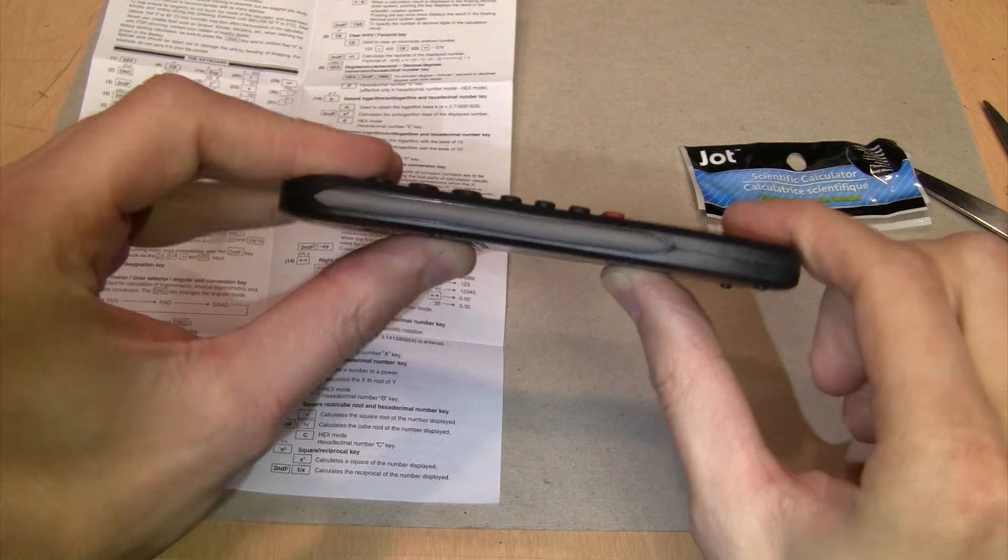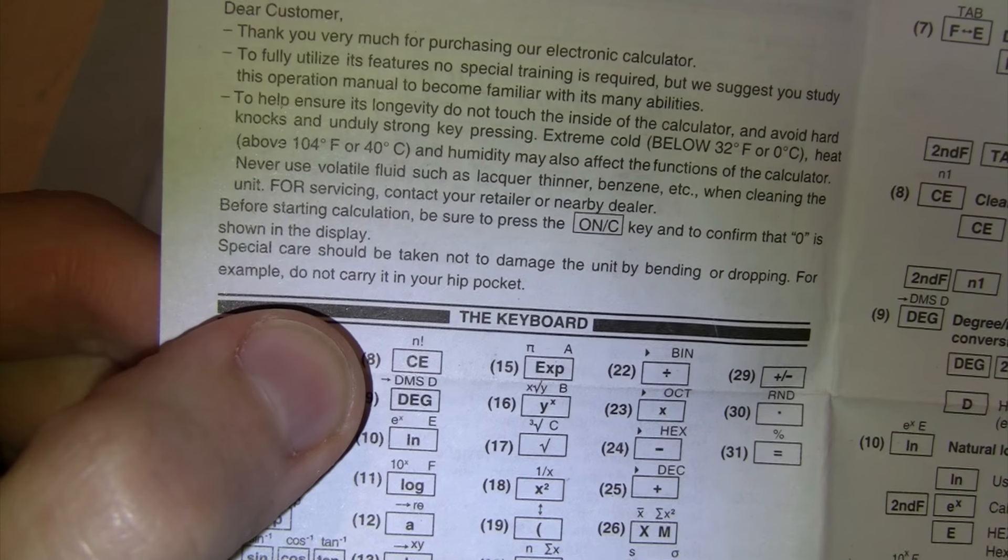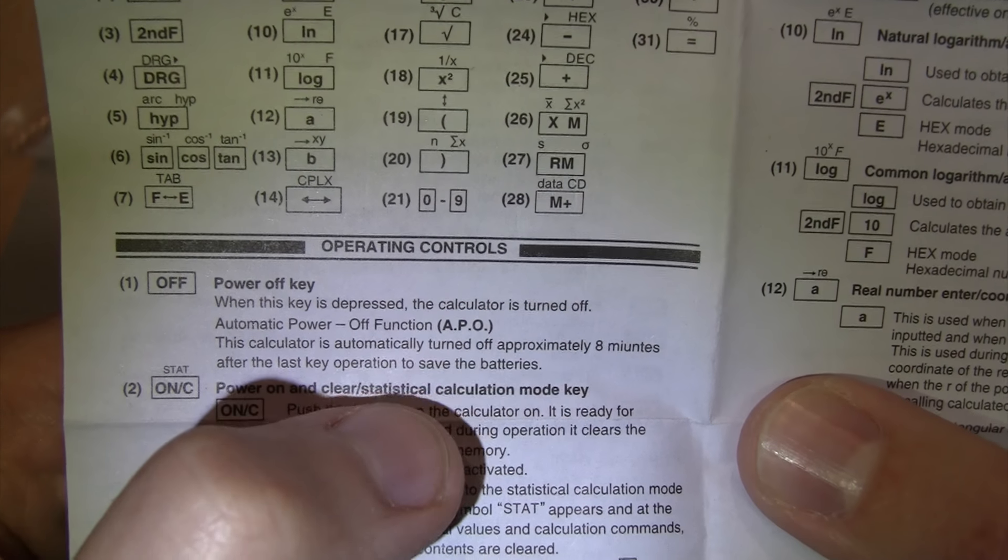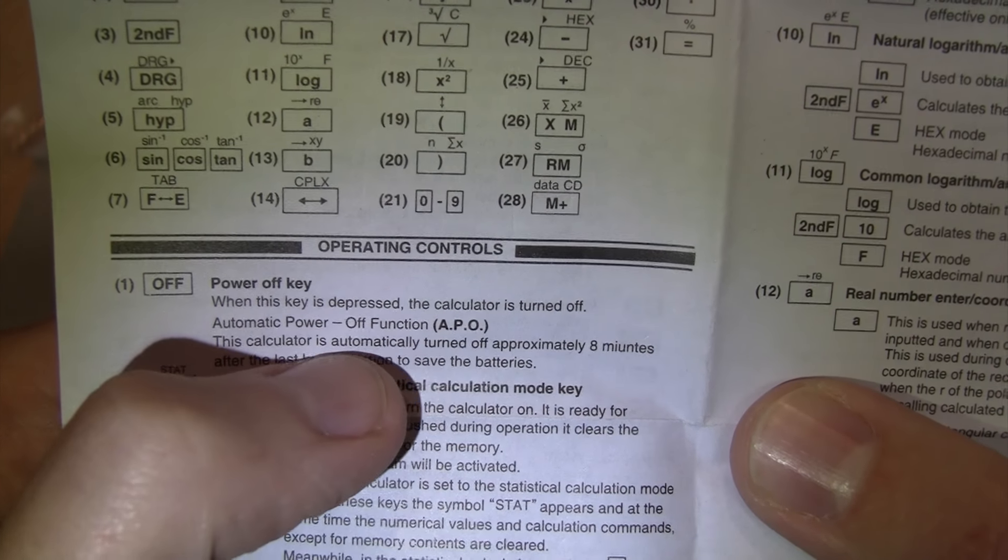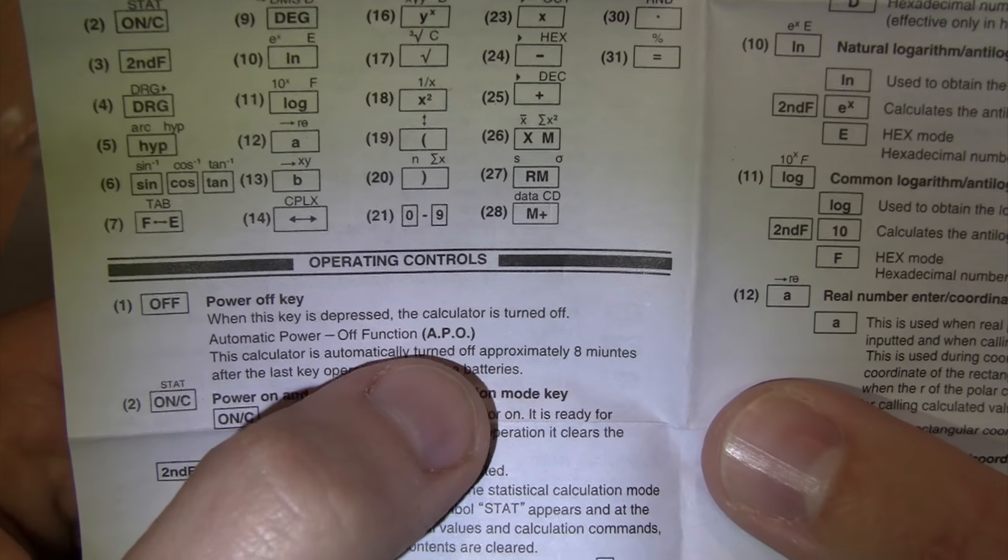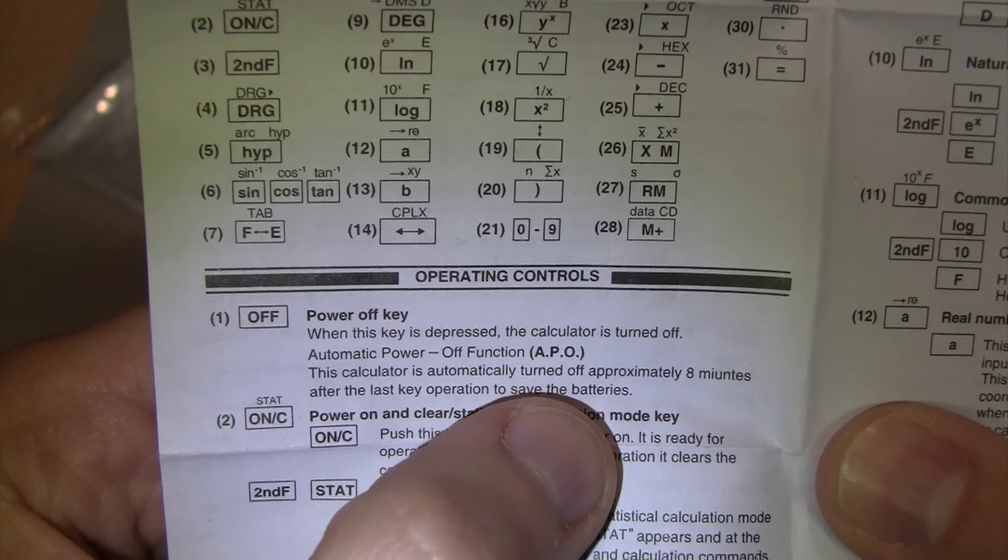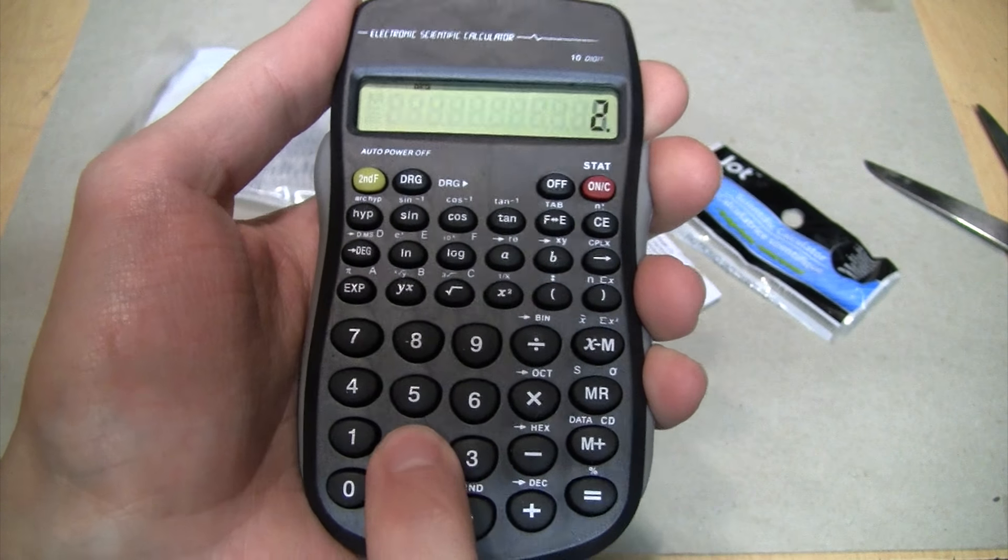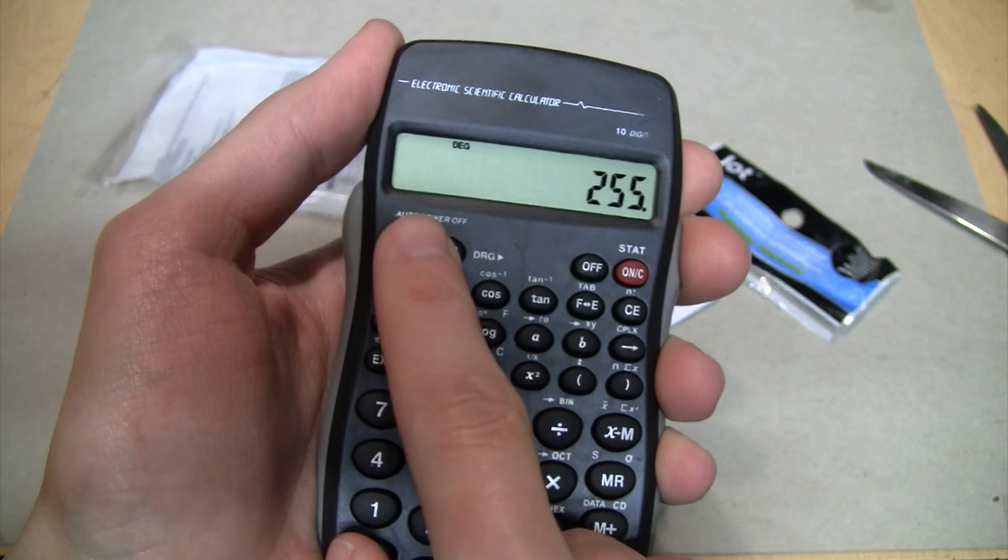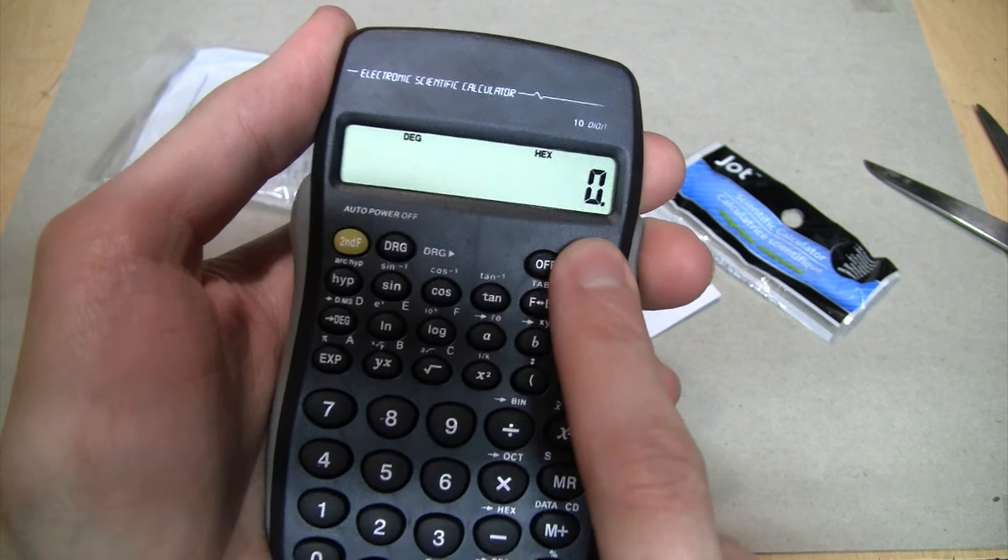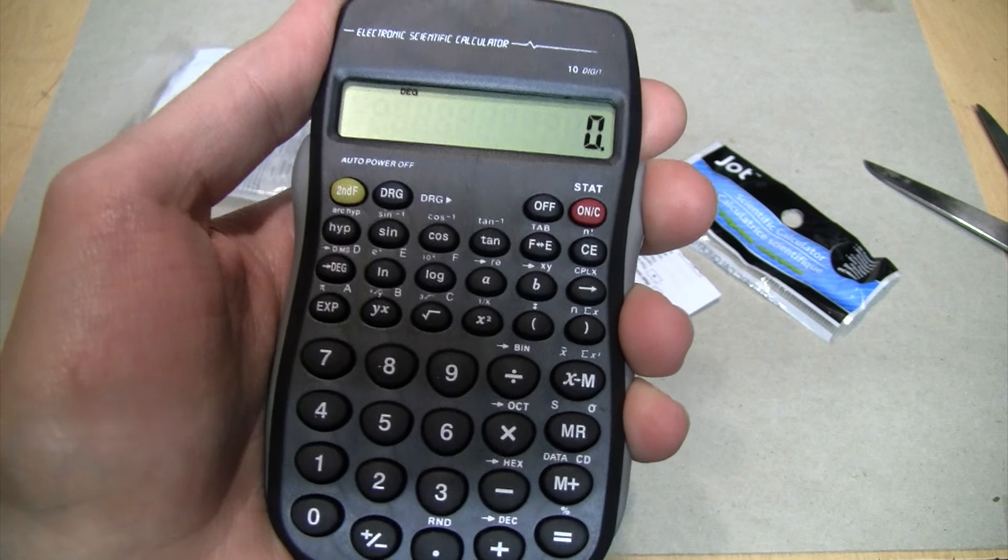Or above 104 degrees Fahrenheit, so don't take it to Death Valley either. For servicing, contact your retailer or nearby dealer. Yeah, like somebody's actually going to service a one dollar calculator that came in a plastic bag. Special care should be taken to not damage the unit by bending or dropping. Does it really bend that much? Not really. For example, do not carry it in your hip pocket, so this is not for hipsters. I like how they give automatic power off an acronym, APO, and they say it will automatically turn off in approximately eight minutes. Yeah, they built it and even they don't know exactly how long it'll take until it turns off.